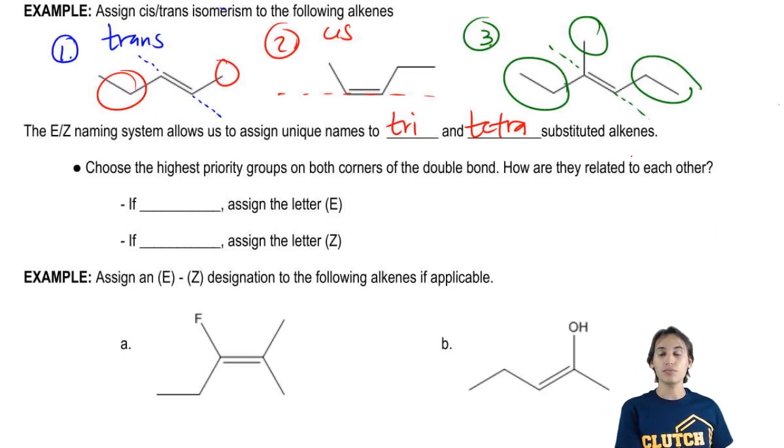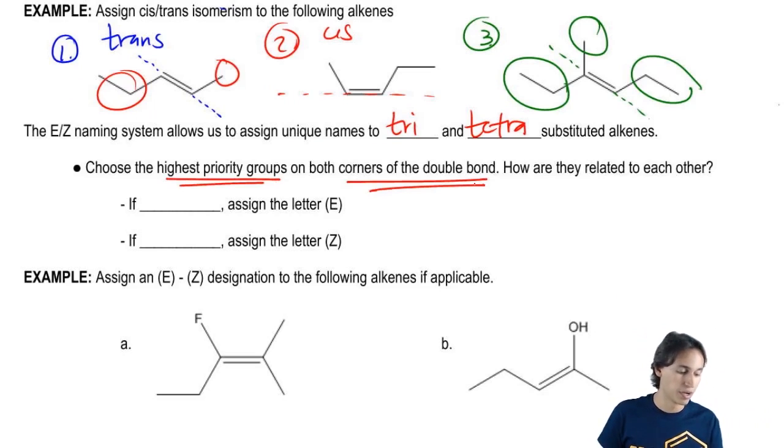When I'm using E and Z, all I do is this. I'm going to choose the highest priority groups on both corners of the double bond.